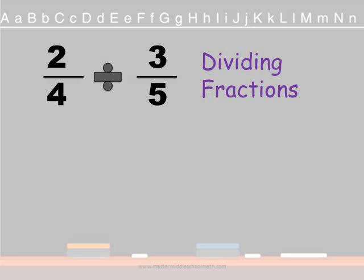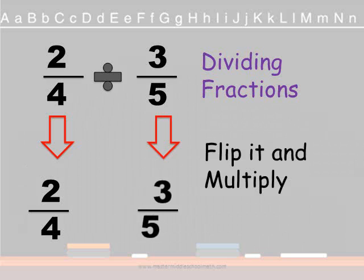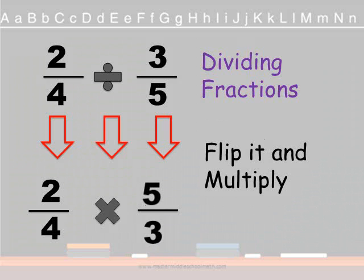Now dividing fractions, we have 2 fourths divided by 3 fifths. Now you just have to memorize one step and then you turn it into the easiest problem, multiplication. So the first term, 2 fourths, stays the same. The second term, you're going to flip it and multiply. Now it becomes a multiplication problem, which is the easiest fraction problem.